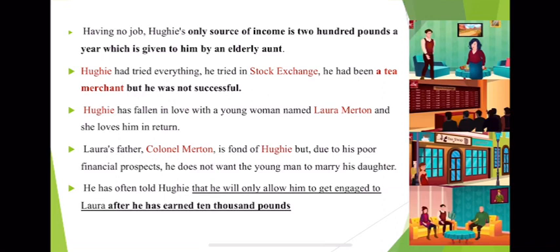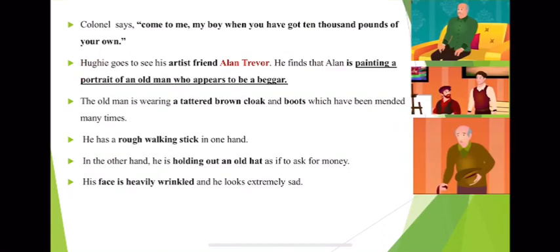As typically seen in Bollywood movies — 'Jab tak tum das hazar paund nahin kama lete, tab tak main tumhey aapne bayti ka hath nahin de sakta' — this is the kind of conflict in the life of Hughie Erskine. Colonel Merton often told Hughie he would only allow him to get engaged to Laura after he had earned 10,000 pounds. When Hughie goes to Colonel Merton, he says: 'Come to me, my boy, when you have got 10,000 pounds of your own.'